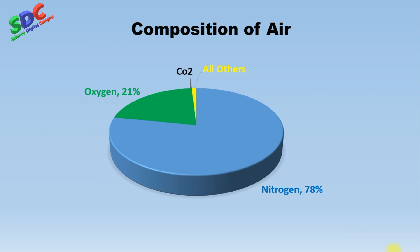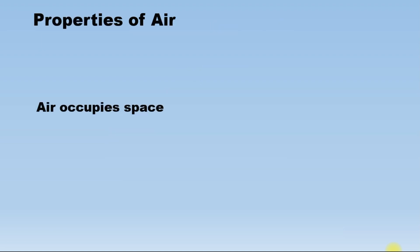Along with these, air also contains hydrogen, argon, helium, water vapor, and dust particles in trace amounts. So far we have seen that air is invisible and is a mixture of gases. Air also exhibits certain properties.